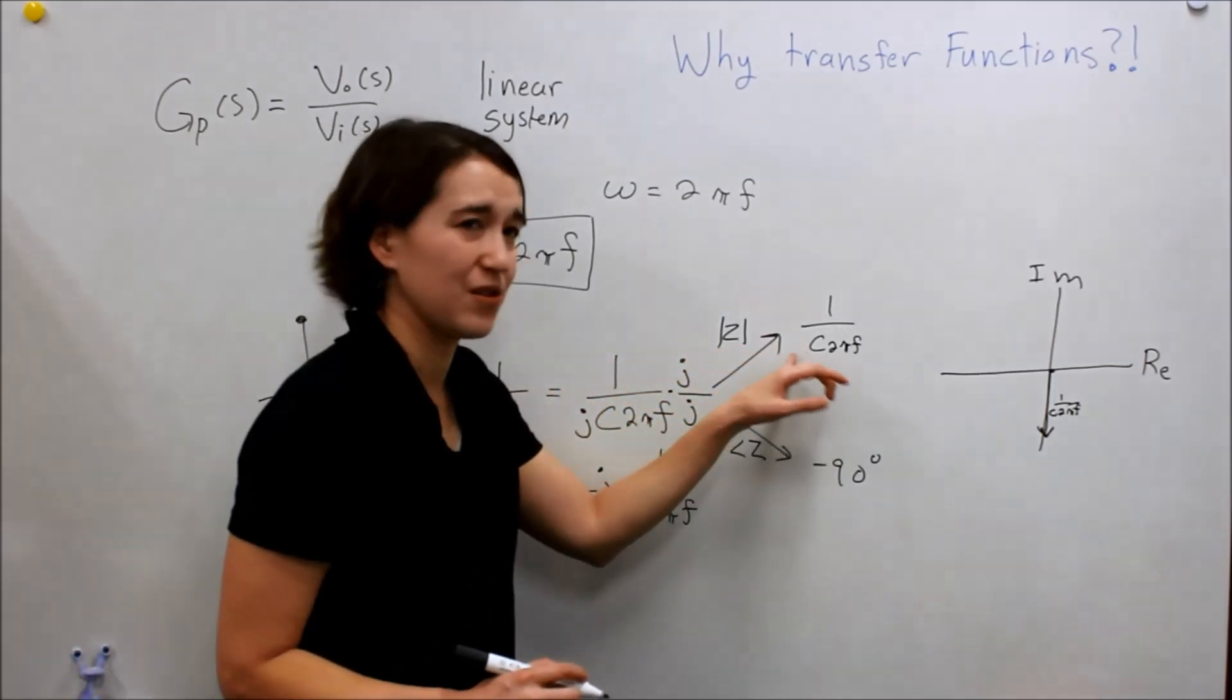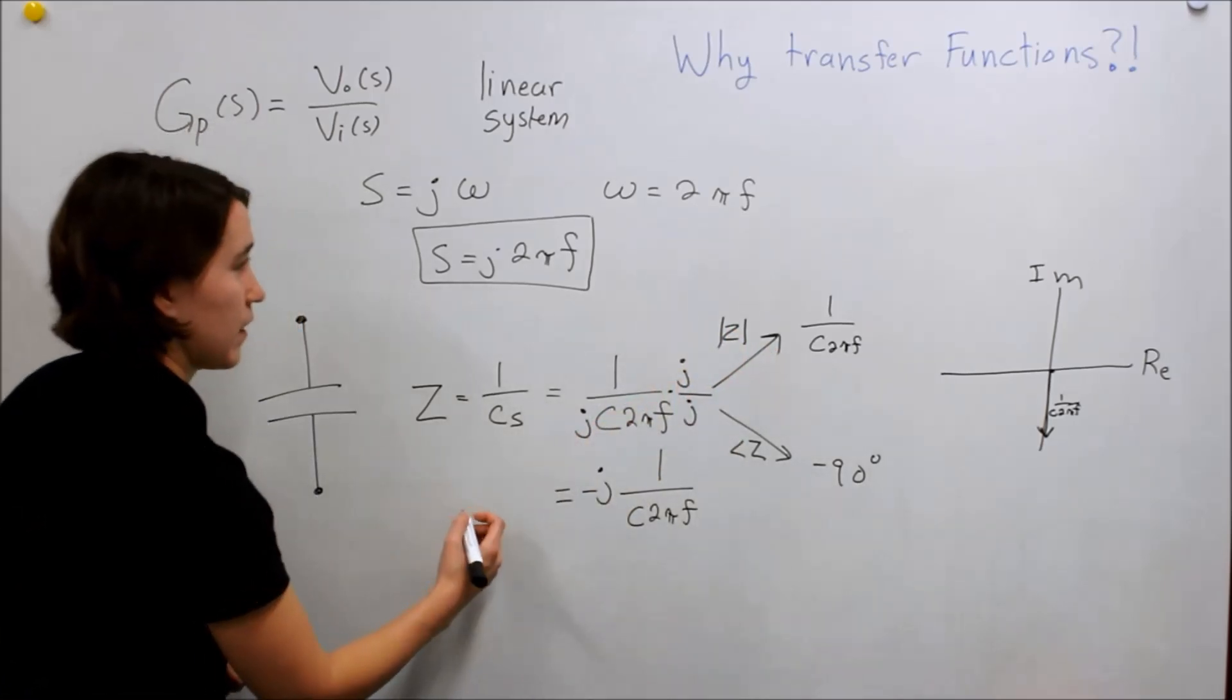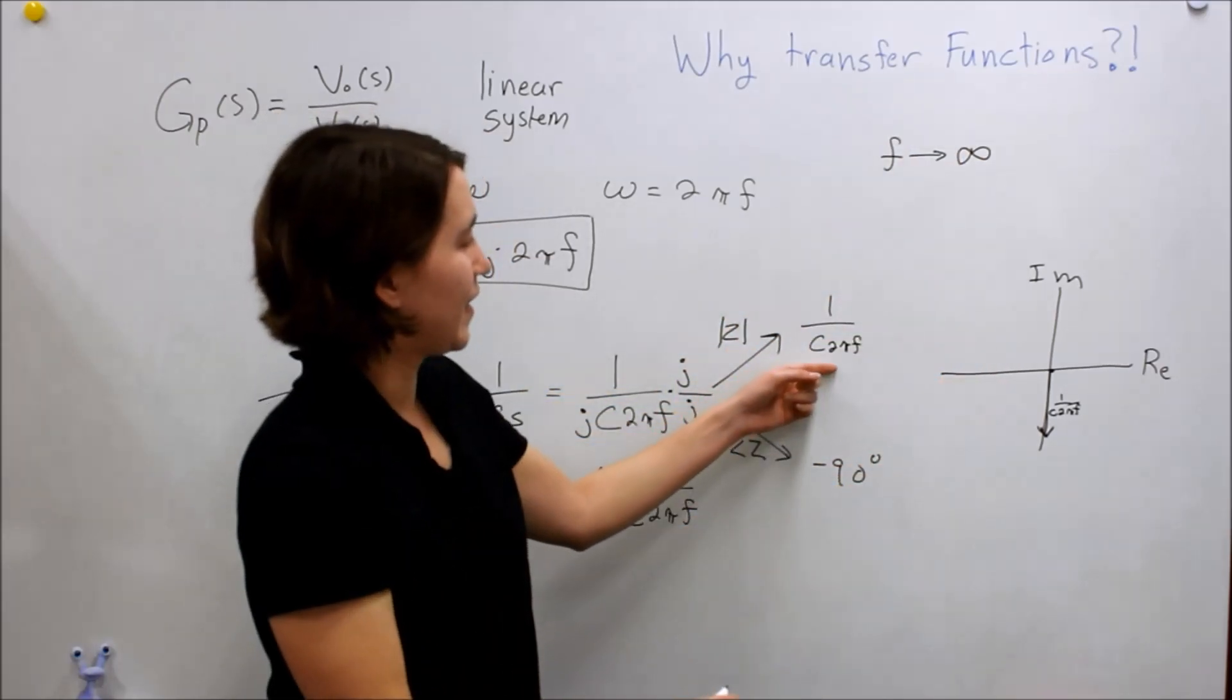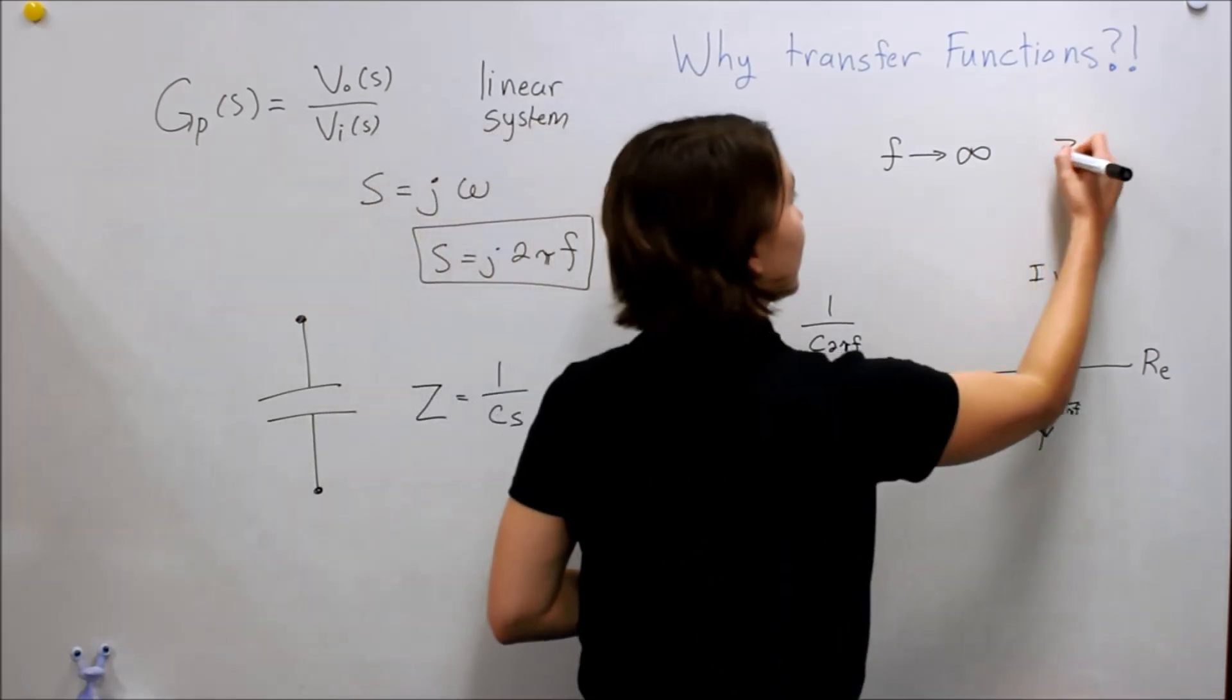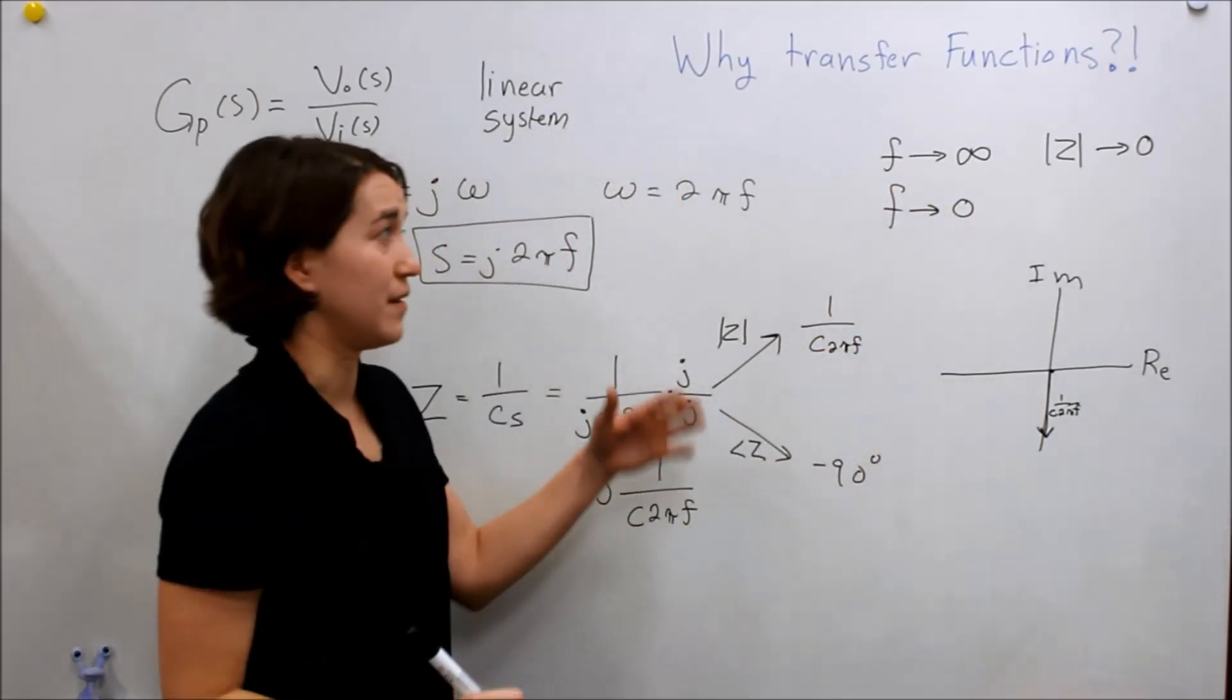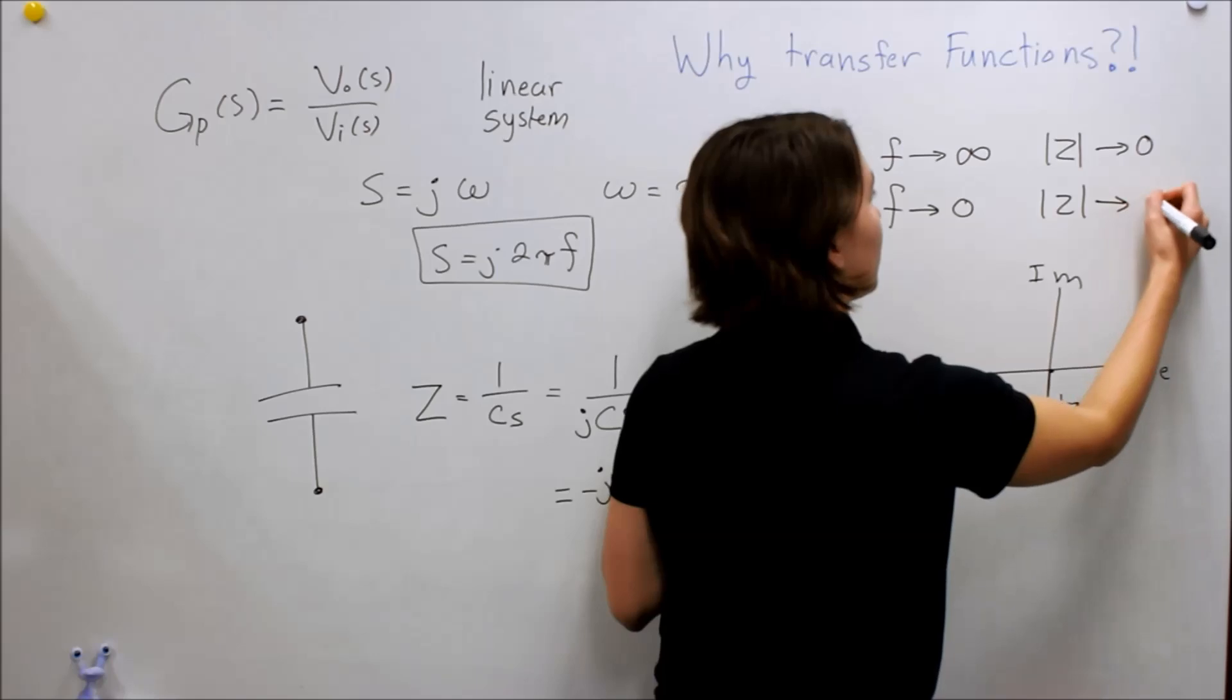What I want to focus on is actually the magnitude here. So if we look at a very high frequency, let's write this here. Let's say that frequency is very high. We're looking at a very high frequency. It's going towards increasing, increasing, and increasing. If we take this expression, f towards infinity, we'll see that it goes towards zero. So the magnitude of Z would go towards zero.